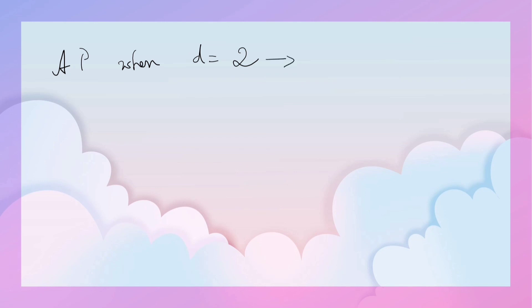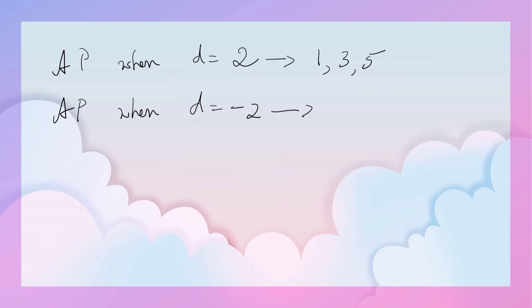So the AP when D is equal to 2 is 1, 3, 5 — observe, sum is 9, product is 15. The AP when D is minus 2 is 5, 3, 1 — here also, sum is 9 and product is 15.